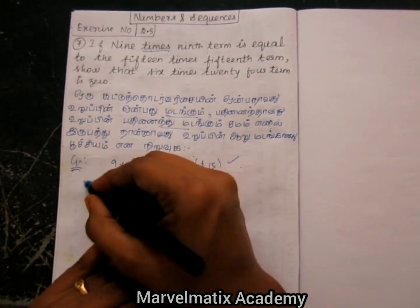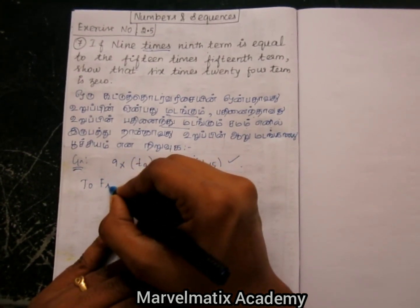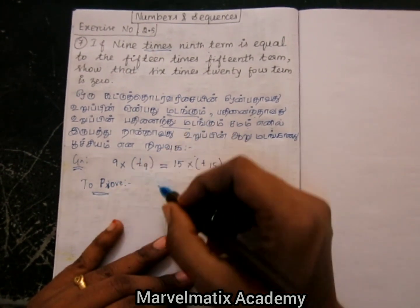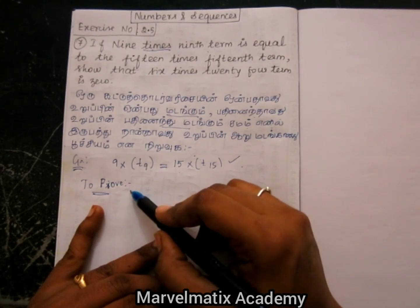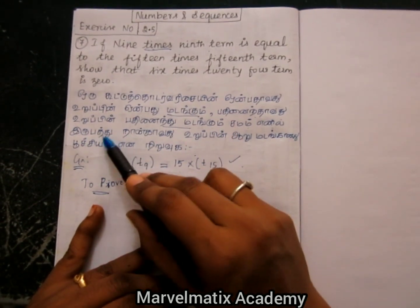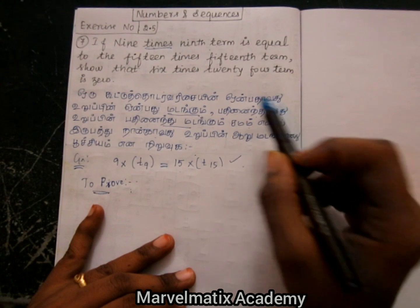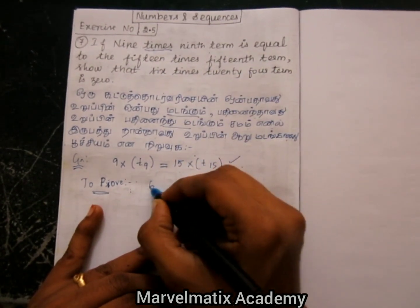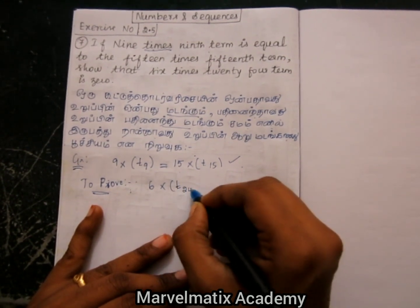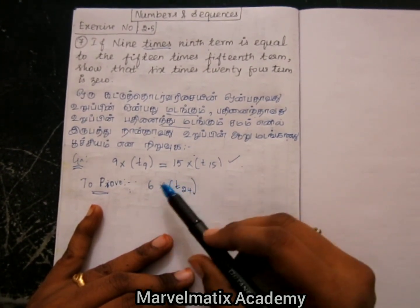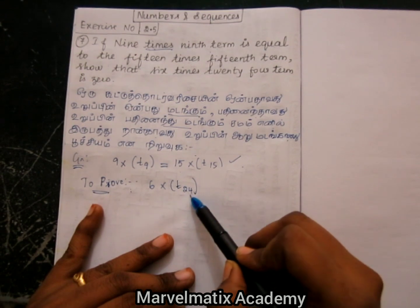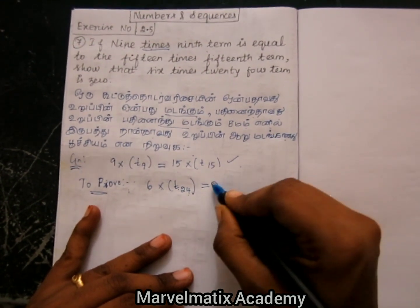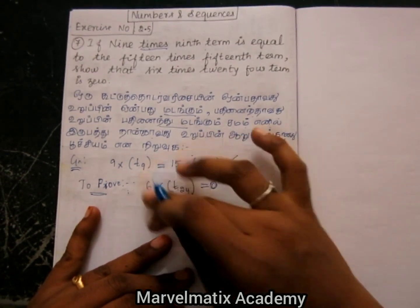To find — to prove. Nirubik yenna — to prove: 6 madangu, 6 times 24th term, 6 times T24. The 24th term: 6 madangu poojjiam enyan — 6 times T24 equals zero. So this value is 0. Proof — so in the wordings.